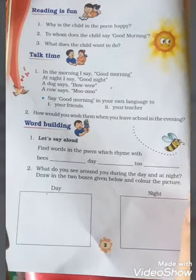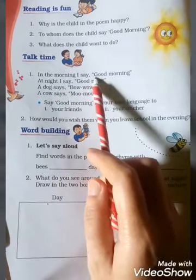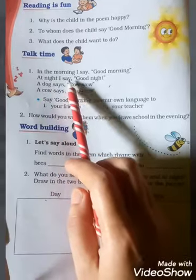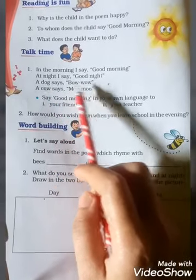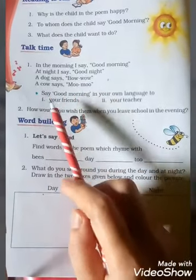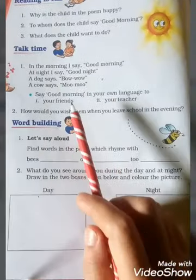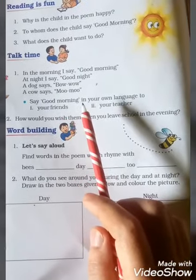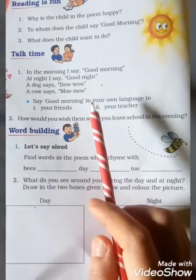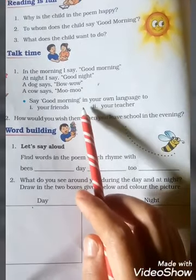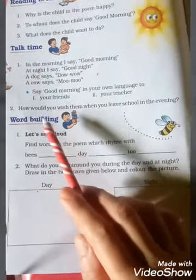Here in the Talk Time section, in the morning I say good morning, at night I say good night. A dog says wow wow, a cow says moo moo. Say good morning in your own language to your friends and your teacher. You can say the word which means good morning in your own language with your parents, sister, brother, or whoever is at home.